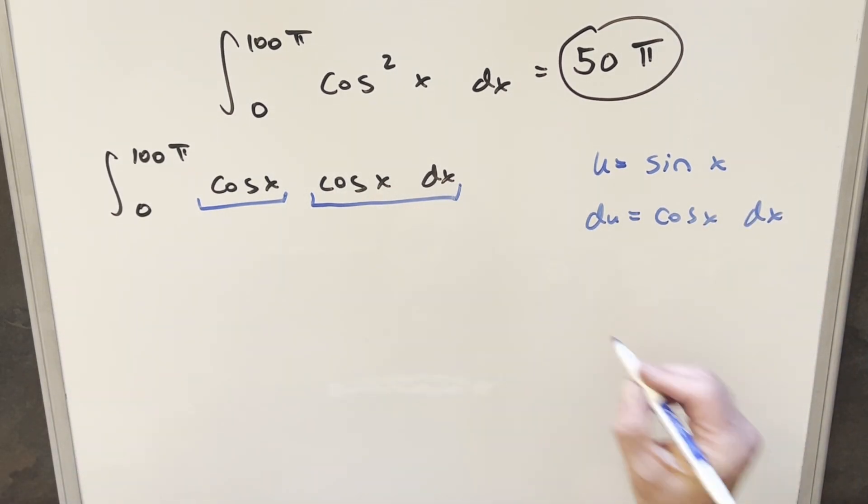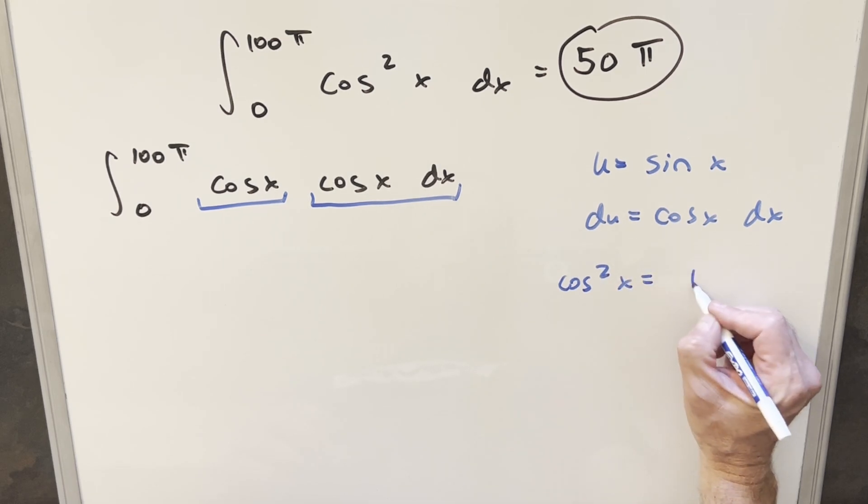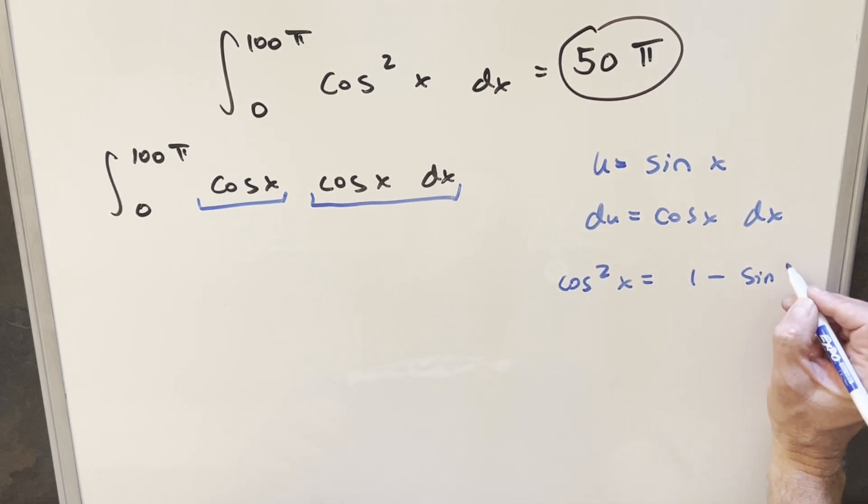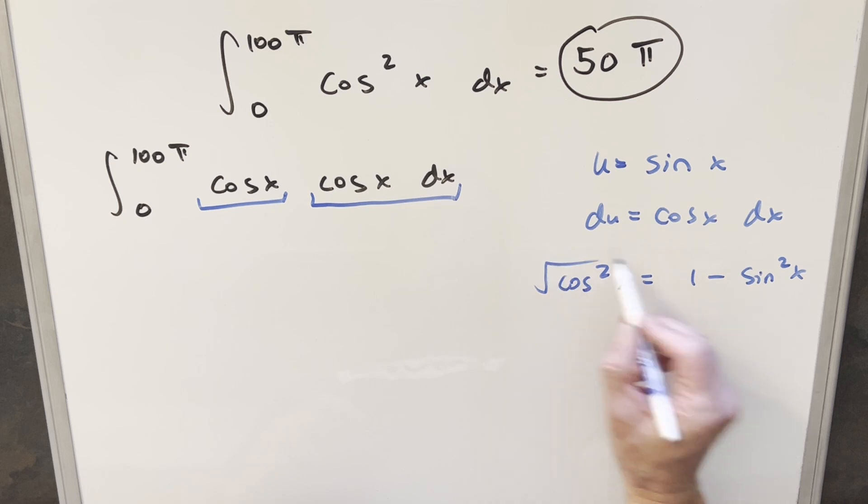And so then we're going to need our value for cosine. You know, we have our u in terms of sine. So what we can do is we can use, we know cosine squared x is 1 minus sine squared x. So we can take a square root on both sides, get our value for cosine x.